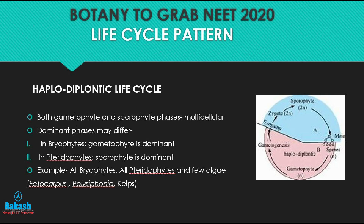Next we have the haplodiplontic life cycle, as seen in bryophytes and pteridophytes, where there is an intermediate condition in which both gametophyte and sporophyte are multicellular. In bryophytes, the gametophyte is dominant, independent, and photosynthetic, while the sporophyte — the foot, seta, and capsule of a moss — is dependent upon the gametophyte for anchorage and nutrition. In pteridophytes, the photosynthetic vascular sporophyte is the dominant phase and alternates with a heart-shaped gametophyte called the prothallus, which is multicellular, independent, but short-lived. Ectocarpus, Polysiphonia, and kelps are examples of algae also showing a haplodiplontic life cycle.